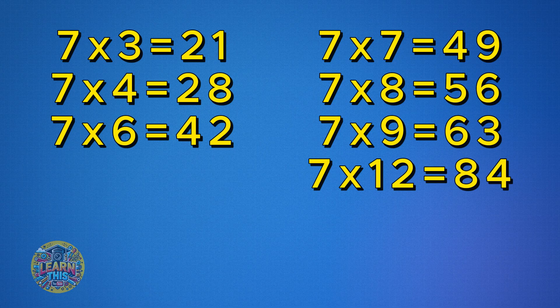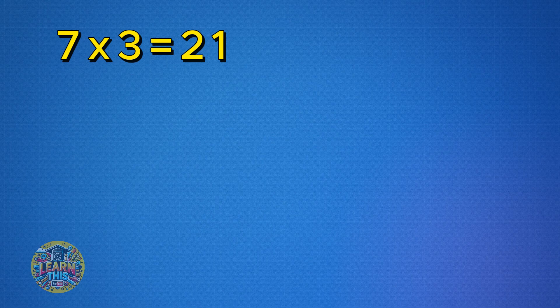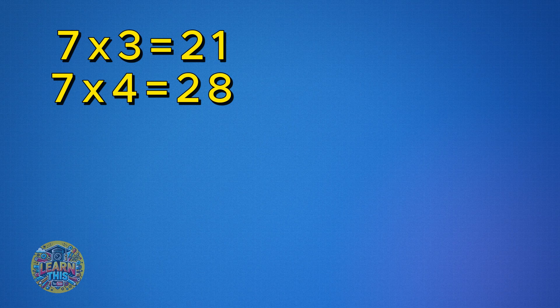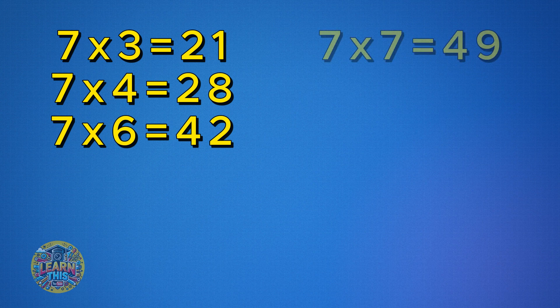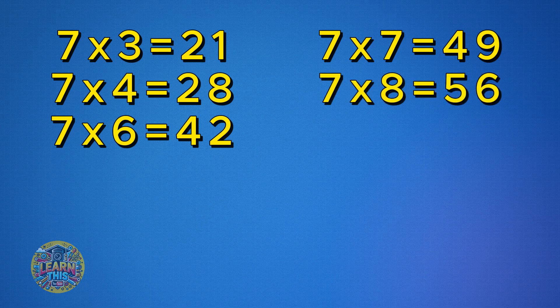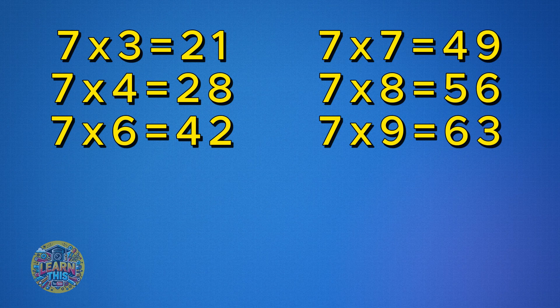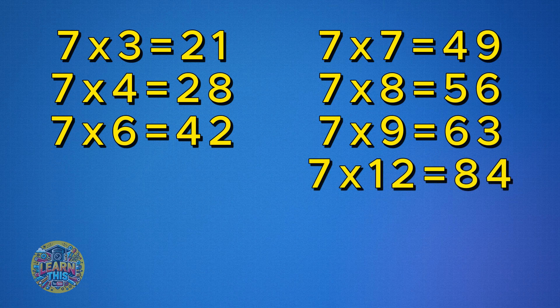Let's review them again. Seven times three is 21. Seven times four is 28. Seven times six is 42. Seven times seven is 49. Seven times eight is 56. Seven times nine is 63. Seven times twelve is 84.